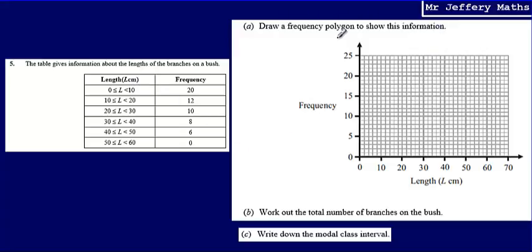So this is nice and simple. To draw a frequency polygon, all I have to do is connect the midpoint with the frequency. So for 0 to 10, that class interval, my midpoint would be 5, halfway between 0 and 10, and I need to mark that with 20. So I'm just going to mark a point there.